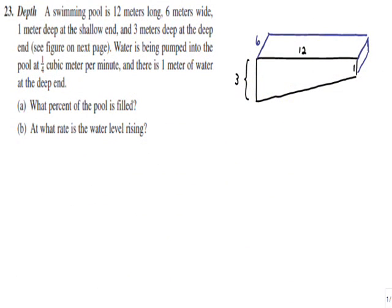Hello AP Calculus AB students. If you're watching this video, you're probably interested in taking a look at Exercise 23 in Larson's ninth edition. We like to call this the swimming pool problem. It is one of the more challenging questions in the homework assignment and it really forces students to investigate the idea of similar triangles, which is the key element I'm going to emphasize here.